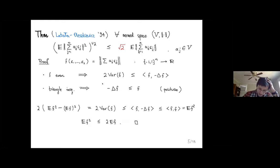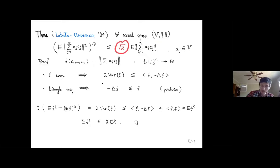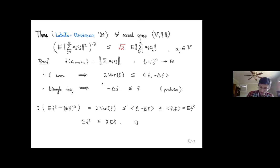Latała and Oleszkiewicz in 1994 proved the following generalization of Szarek's inequality: for every normed space V, we have Khinchine's inequality where the weights aⱼ are now vectors in V, and the expectation is of the norm of the weighted sum. Amazingly, the constant is still √2 in this vector-valued generalization.